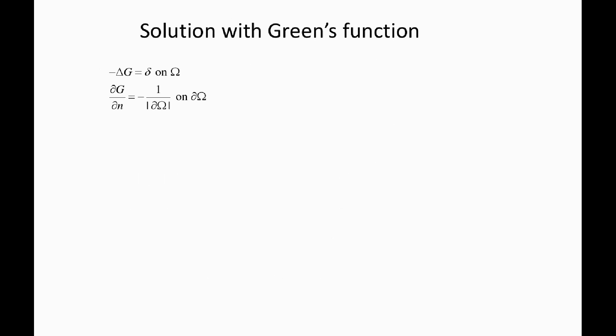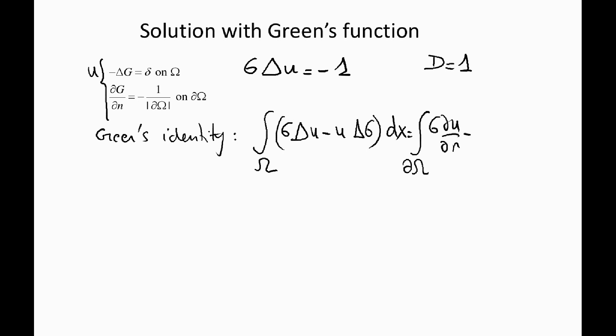Now let's start with the Green's function and now we have to use this to solve the equation. I will assume that the diffusion coefficient is equal to 1. Now what we need to solve is Laplacian U equals minus 1. What we are going to do is multiply this equation by U and this equation by G, and we are going to use the following Green's identity.